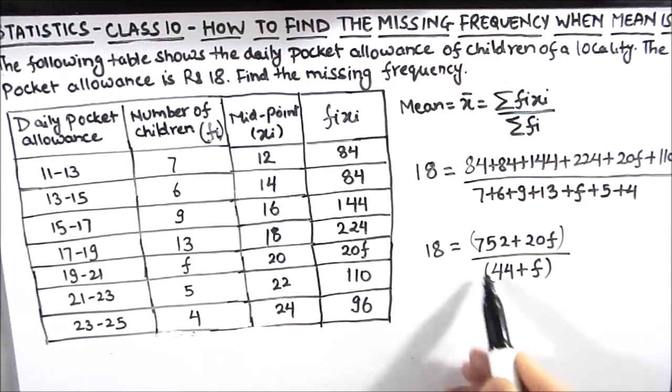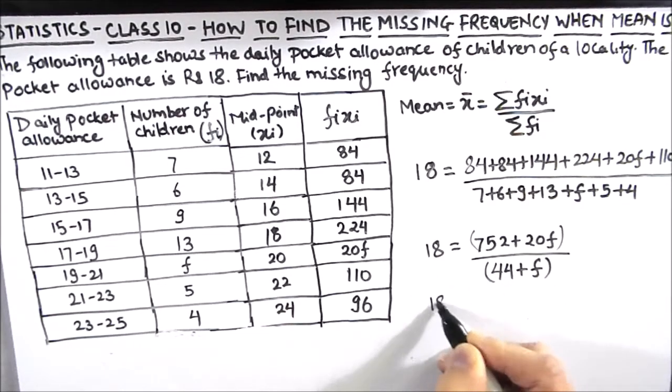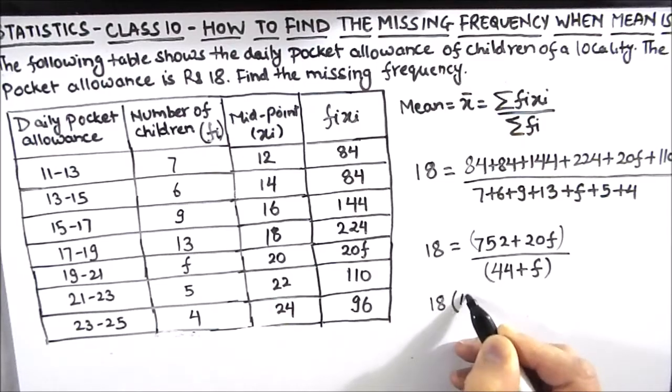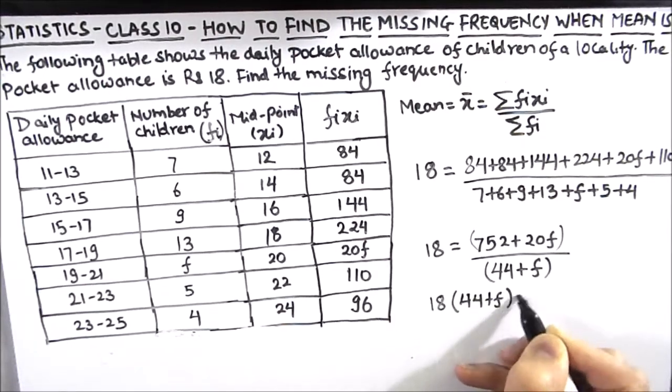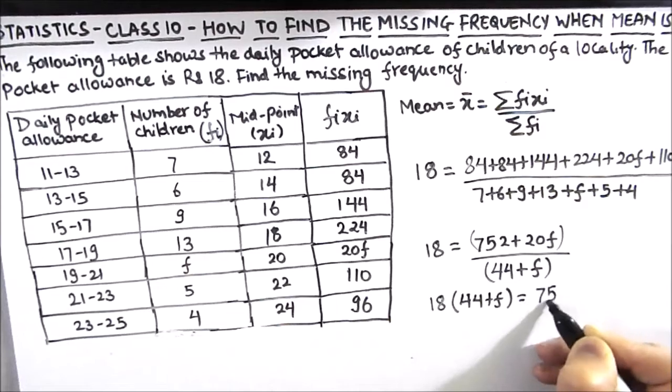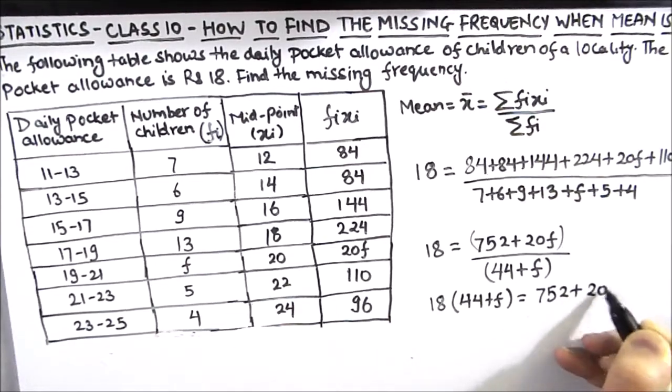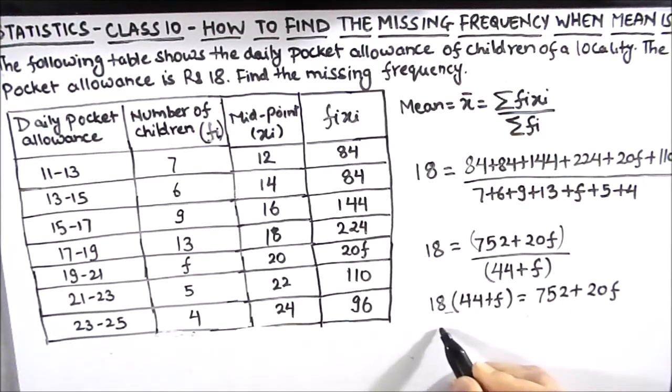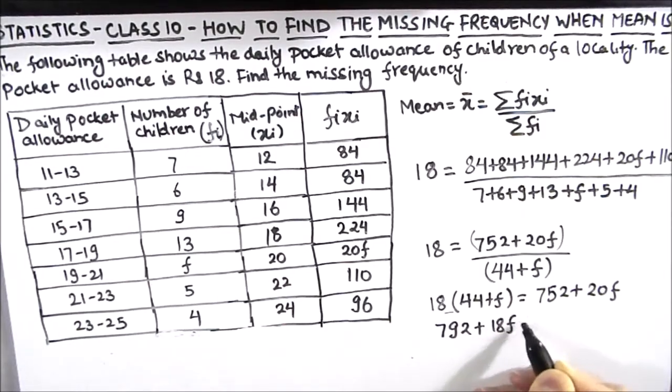For finding the value of f, we are going to cross multiply. So this is going to be 18 times (44 plus f) equals 752 plus 20f. So 18 times 44 is 792 plus 18f equals 752 plus 20f.